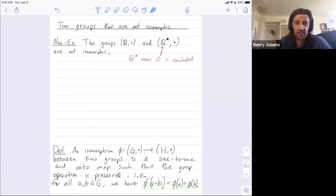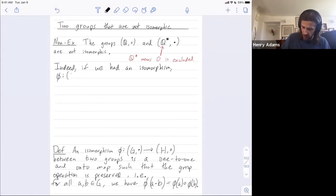Nevertheless, we're going to show that there's no possible isomorphism between them. So here's how we're going to do it. Indeed, if we had an isomorphism, I'll call it phi from the rationals under addition to the non-zero rationals under multiplication.